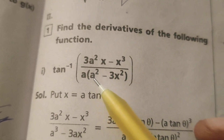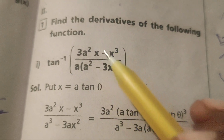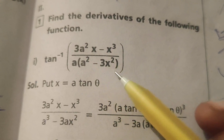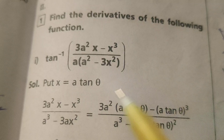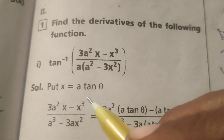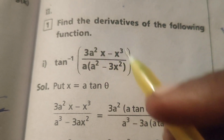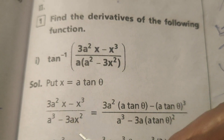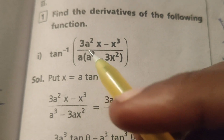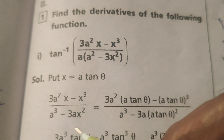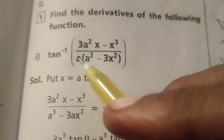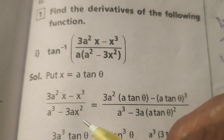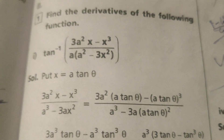Find the derivative of the following function: tan inverse of (3a²x - x³) divided by a(a² - 3x²). To solve this, put x equals a·tan θ. In the expression, we take 3a²x minus x³ in the numerator, and a multiplied by a² minus 3ax² in the denominator.